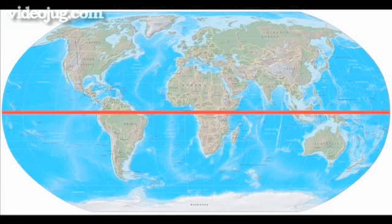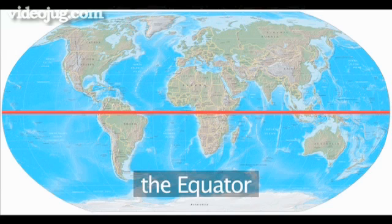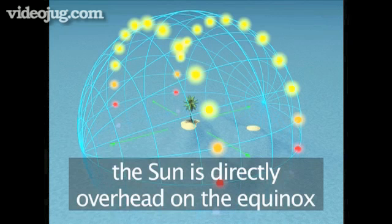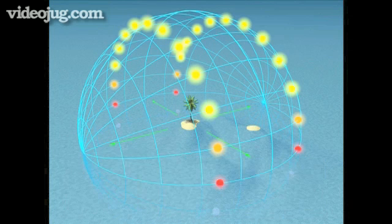We have drawn imaginary lines running around the Earth. At the center, we call it the equator. This is halfway between the north and south poles. On both equinoxes, the sun will be directly overhead here.